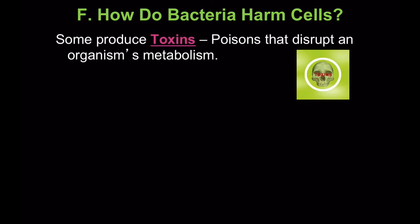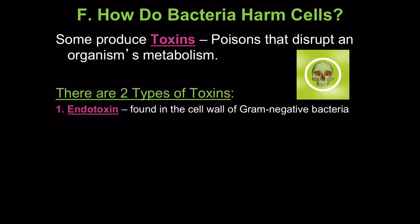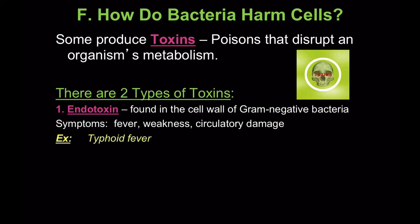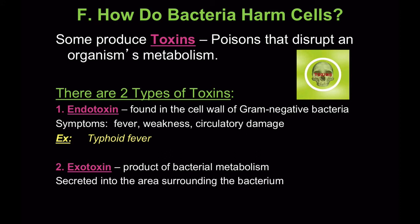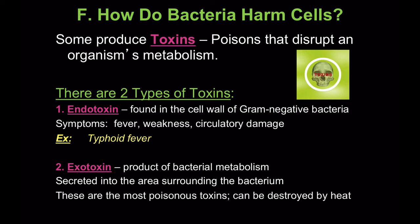So how do bacteria harm cells? Some produce toxins — poisons that disrupt an organism's metabolism — and there are two types. An endotoxin is found in the cells of gram-negative bacteria, with symptoms like fever, weakness, and circulatory damage, as in typhoid fever. Exotoxins are products of bacterial metabolism secreted into the areas surrounding the bacterium. These are the most poisonous toxins and can be destroyed by heat. Gram-negative and gram-positive refers to what substances are in the cell wall and how they're stained with different dyes. Exotoxins are produced by tetanus, diphtheria, and botulism.